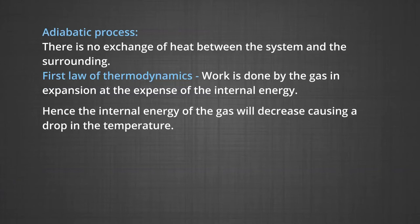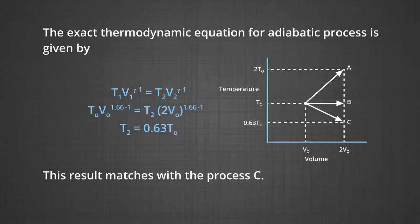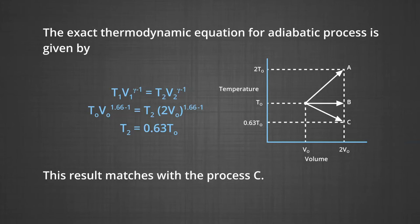In the adiabatic process there is no exchange of heat between the system and surroundings. By the first law of thermodynamics, work is done by the gas in expansion at the expense of internal energy. Hence the internal energy decreases, causing a drop in temperature. The adiabatic equation is T₁V₁^(γ−1) = T₂V₂^(γ−1). Substituting the value of gamma gives T₂ = 0.63 T₀, which matches process C.